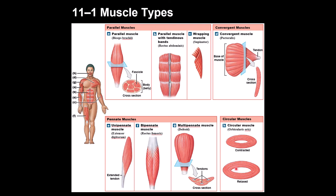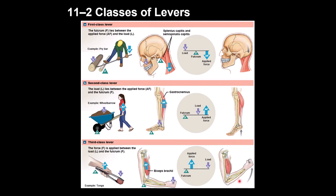When a circular muscle contracts it closes the area; when it relaxes it opens the area. There is also a classification based on levers — a lever is a rigid bar that moves on a fixed point called the fulcrum when a force is applied. In a first-class lever, the fulcrum is in the middle with the load on one side and applied force on the other. An example is the neck, where the posterior neck muscles contract to elevate the head.